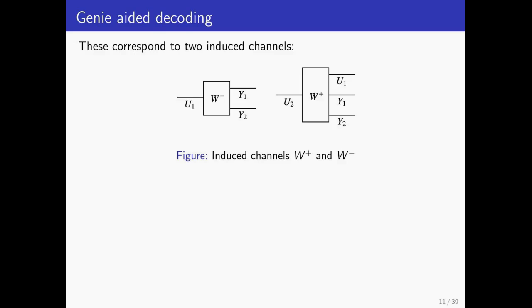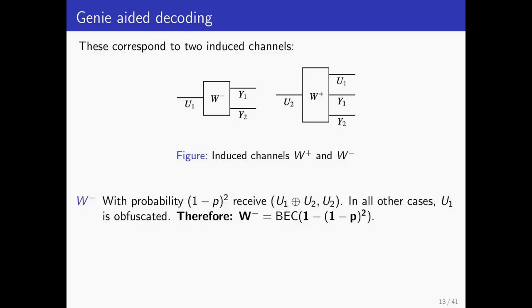Let's try to analyze W minus first. There are four possible cases corresponding to Y1 and Y2 being or not being erased. Just to recap, if Y1 is not erased, we obtain U1 plus U2. And if Y2 is not erased, we receive U2 correctly. So in order to recover U1, both Y1 and Y2 must not be erased. And in this case, we can just use Y1 minus Y2 to guess the value of U1. Both Y1 and Y2 are intact with probability 1 minus p squared and with the remaining probability, there is no hope of recovering U1. So in essence, W minus behaves like a BEC with erasure probability 1 minus the quantity 1 minus p squared.